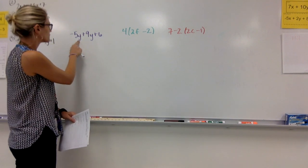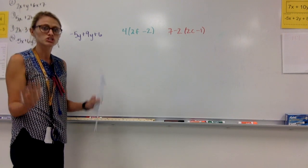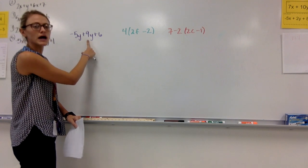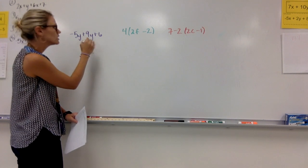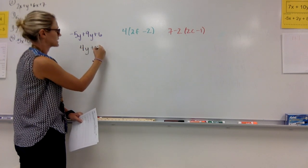The first one, so for example, -5y + 9y + 6, just combining like terms. We should know this. We should know the -5y can combine with the positive 9y to give us positive 4y and then plus 6.